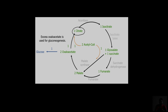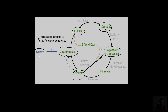To summarize the cycle: citrate → isocitrate → glyoxylate + succinate; succinate → malate; malate → oxaloacetate; and excess oxaloacetate is used for gluconeogenesis to finally produce glucose from lipids.